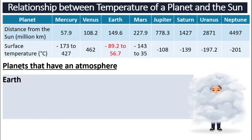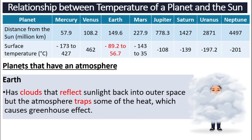Next, we will look at our planet Earth. The Earth has clouds and atmosphere, and these clouds help to reflect sunlight back into outer space. But the atmosphere also traps some of the heat, which causes the greenhouse effect, so we are warm enough and not too cold. The coldest point on Earth is negative 89.2 degrees Celsius, and the hottest point is around 56.7 degrees Celsius. Here in Malaysia, as an equatorial country, our average temperature is somewhere around 30 degrees Celsius.